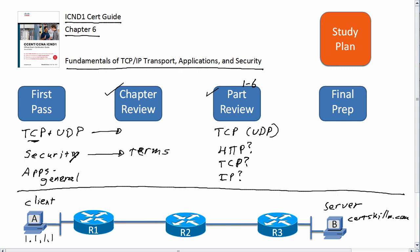I had suggested paying close attention to TCP during the part review. If you're really studying for the CCNA exam taking the one-exam path instead of the two-exam path, you'll actually see some more about TCP — in particular, TCP port numbers — when you get into the access control list topics in the second book. So you will get a little bit more there, but if you're going just for the first exam, definitely want to sink your teeth into the TCP discussions here.